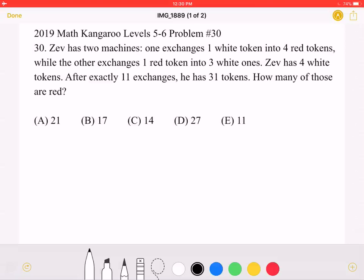Zev has two machines. One exchanges one white token into four red tokens, while the other exchanges one red token into three white ones. Zev has four white tokens. After exactly 11 exchanges, he has 31 tokens. How many of those are red? A. 21, B. 17, C. 14, D. 27, or E. 11.